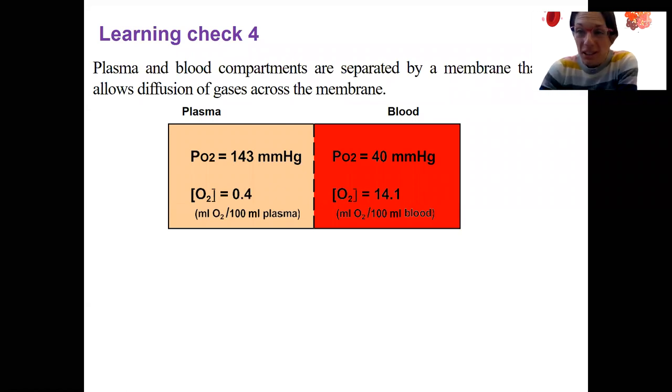Learning check four. This one's kind of tricky, but I'll walk through it. It's useful, I think. So here are two compartments, blood and plasma, separated by a membrane that allows for diffusion of gases, like oxygen for example.